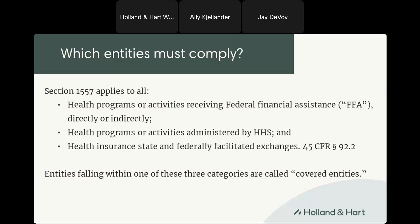Which entities must comply? Section 1557 applies to all health programs or activities receiving federal financial assistance, also known as FFA. That can be received directly or indirectly. FFA can include any grant, loan, credit, subsidy, contract — other than a procurement contract, but including contracts of insurance — or any other arrangement by which the federal government either directly or indirectly provides assistance in some form, including funds, services of federal personnel, or real or personal property.